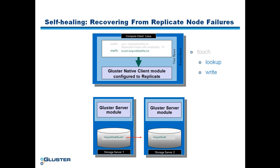Lookup typically ensures that the file exists, the application or the user has the write permissions, etc. With Gluster replicate volumes, lookup also reads and analyzes the change logs for the file being accessed. Here, the client will see that the file ha.txt has an operation pending on server 2.